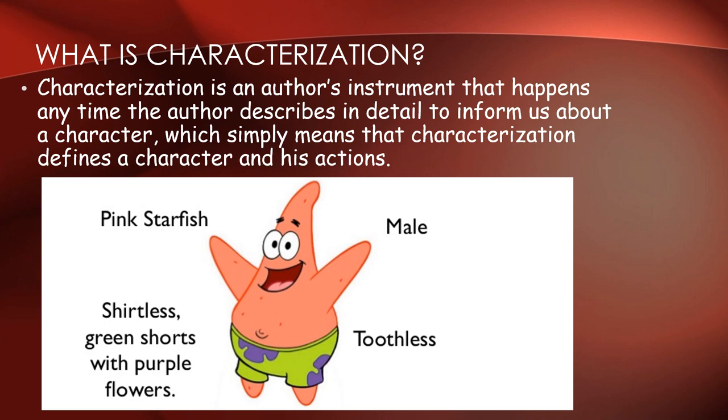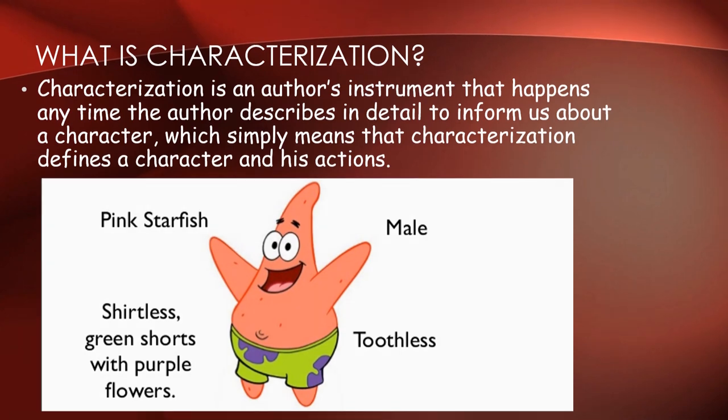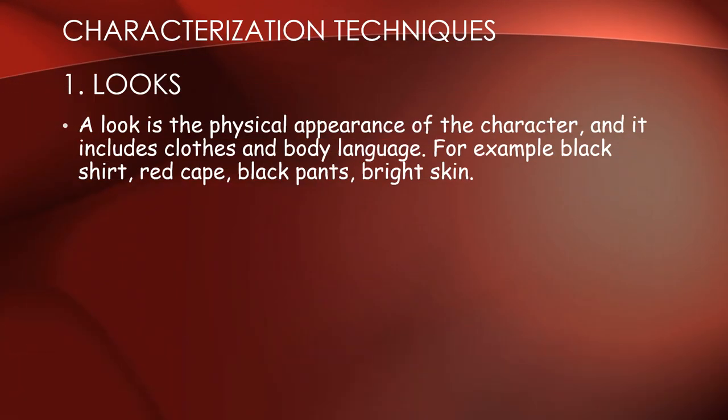Here is another picture with another character from a movie. We use this character to give us more description. These are the techniques we use in characterization. We have the physical description of the character, the outfit of the character, and things inside the character. Inside the character refers to emotion and thought — what the character thinks, something that happened in the past, or something that will happen in the future. These are the most important techniques for the character.